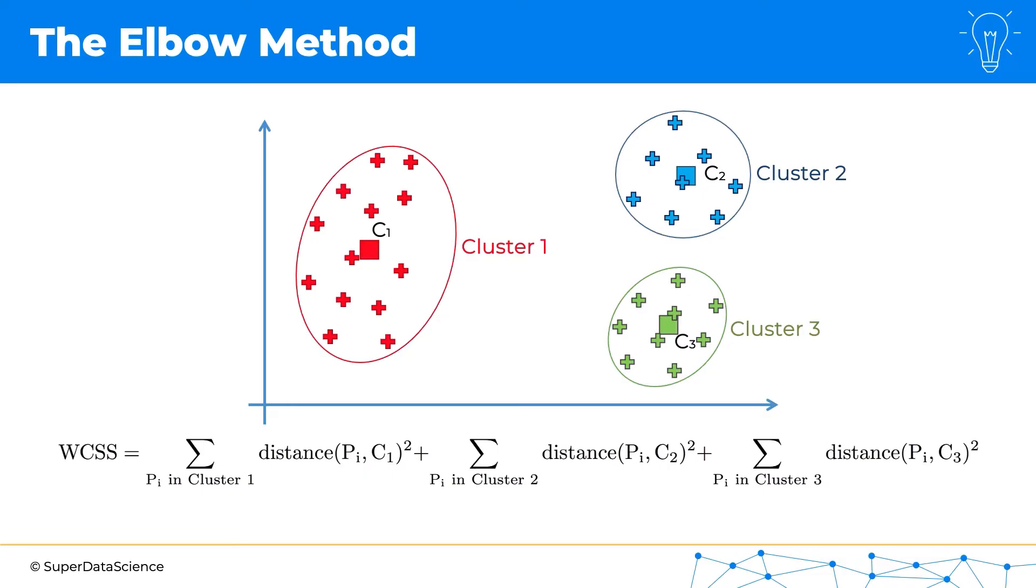So it's kind of a bit backwards. We don't first do the elbow method to find the optimal number of clusters and then do k-means. We do k-means many times, find the WCSS for every single setup, whether it's one cluster, two, three, four, five, and so on. And then we will be able to apply the elbow method, which is coming up on the next slide.